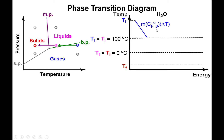Once we touch the boiling point temperature, we have to go horizontal for some time — this is the phase transition plateau. In the horizontal regime where temperature doesn't change, we rely on ΔH to obtain the energy. Since we're at the boiling point, this is ΔH of vaporization, multiplied by the number of moles of the substance.